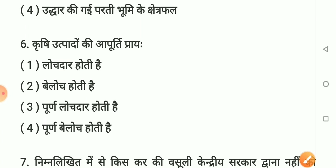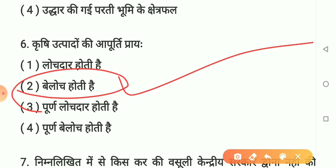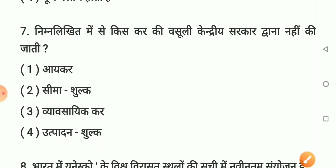Question number 6: Krishi utpadon ki aapoorti praaya kya hoti hai? Option 1 - lochdar. Option 2 - belochdar hoti hai. Option 3 - poorniya lochdar hoti hai. Option 4 - poorniya belochdar hoti hai. Sahi answer hai option 2: Krishi utpadon ki aapoorti praaya belochdar hoti hai. Yaad rakhiye.